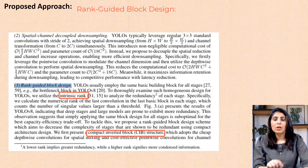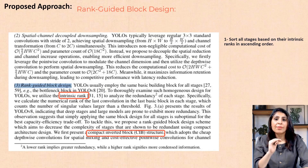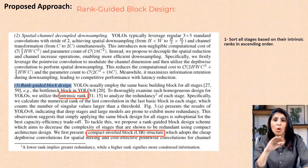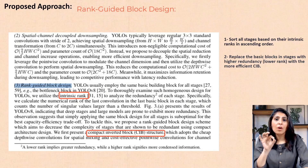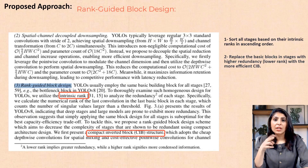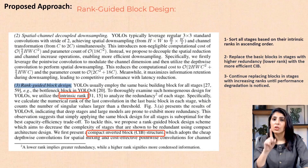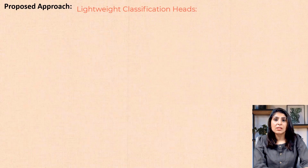Here is how rank-guided block allocation works: first, all stages are sorted based on their intrinsic ranks. Then the blocks in stages with higher redundancy — meaning lower rank — are replaced using the compact inverted block (CIB). They continue replacing blocks in stages with increasing ranks until performance degradation is noticed.